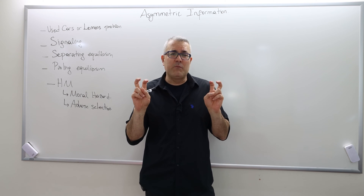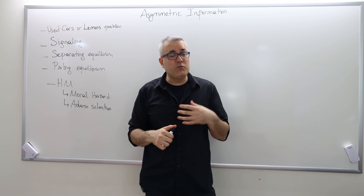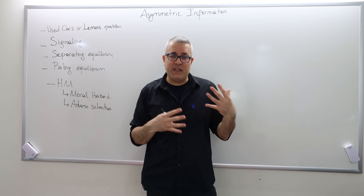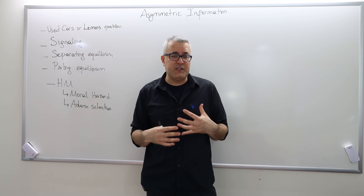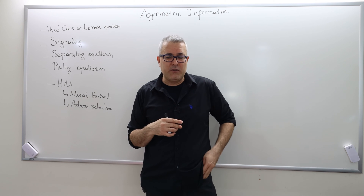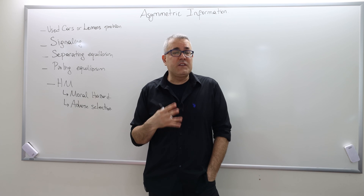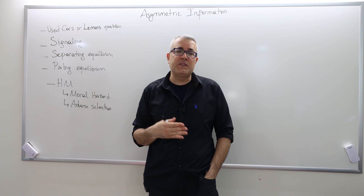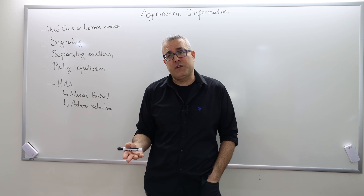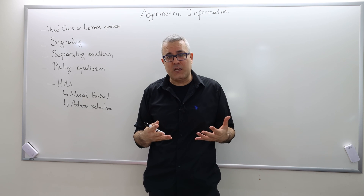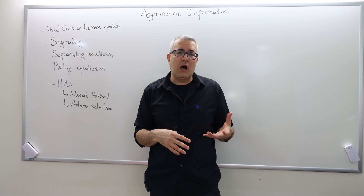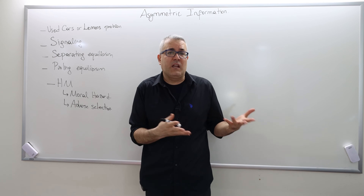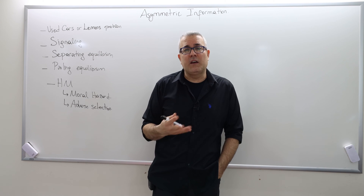One of those minor assumptions — which we didn't explicitly state — is that information is symmetric. In Intermediate Microeconomics 2, starting from monopoly and oligopoly, we actually began talking about scenarios where the market outcome could be inefficient. Remember, monopoly causes deadweight loss — that's basically inefficiency. And oligopoly, duopoly — when competition is not perfect, there is still inefficiency.